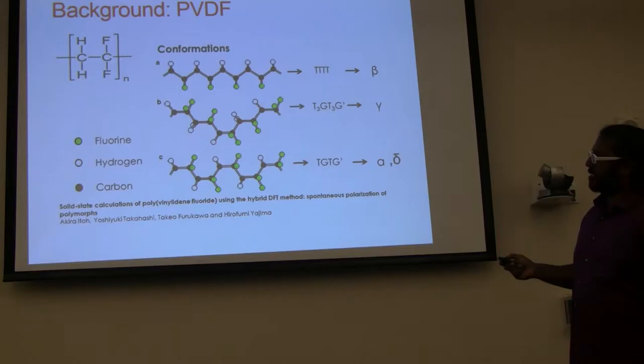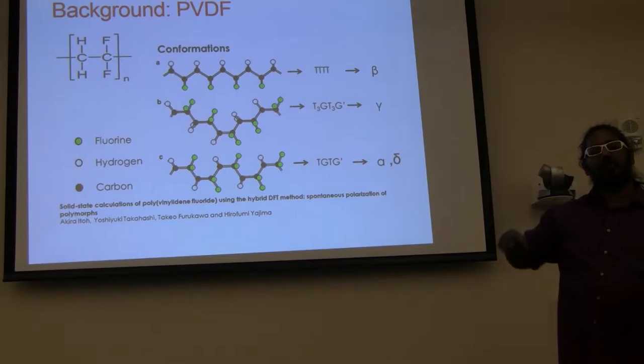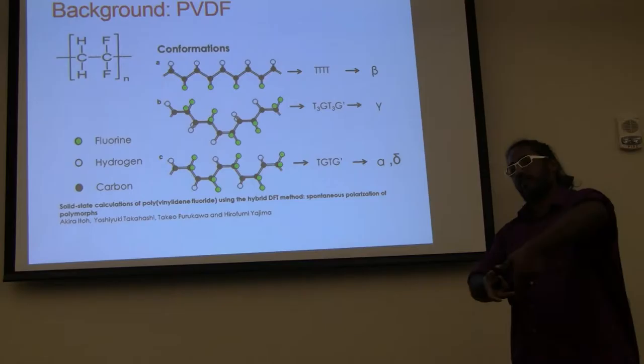And then lastly, we have this alpha phase, which is a trans-gauche phase. It's alternating trans-gauche bonds. When these pack together, they pack in such a way that one dipole moment is pointing up and the other dipole moment is pointing down. So there's no net macroscopic polarization. But if you apply a large enough electric field to it, we can get the delta phase by basically rotating one of these chains all the way around. And then we get two dipoles pointing in the same direction.